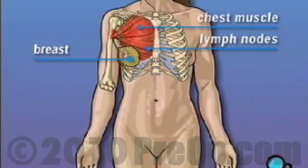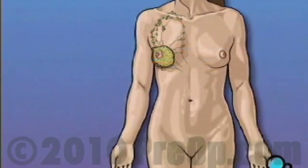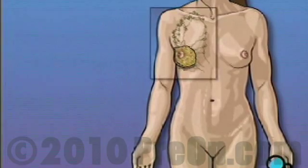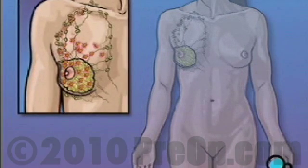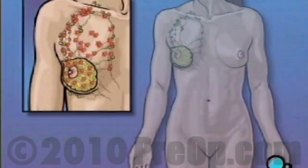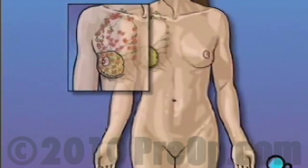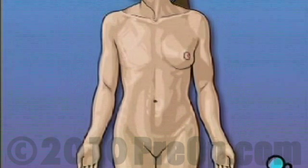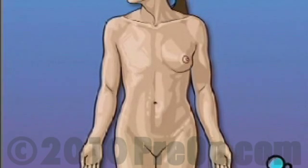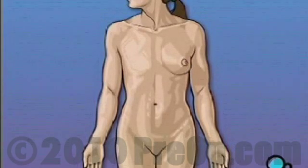Your doctor has recommended that you undergo a total mastectomy because the cancer in your breast has progressed to the point that it is in danger of spreading into other parts of your body. The only way to make sure that all of the disease has been eliminated is to remove the entire breast. This is major surgery and the procedure will permanently change the outward shape and appearance of your chest, so make sure that you ask your doctor to carefully explain the reasons behind this recommendation.